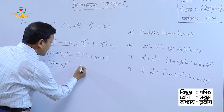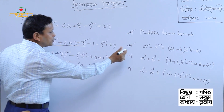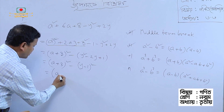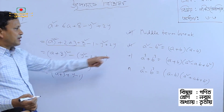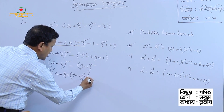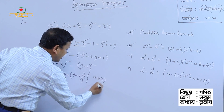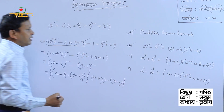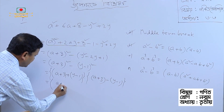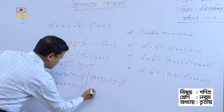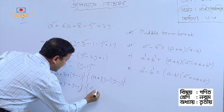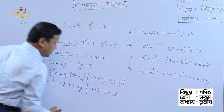So, I will say y minus one, whole square. h² minus b², a² minus b². I will say a plus b bracket, a minus b. So, I will say a plus b, a minus b. I will say a plus three y minus one. So, I will say a second bracket.